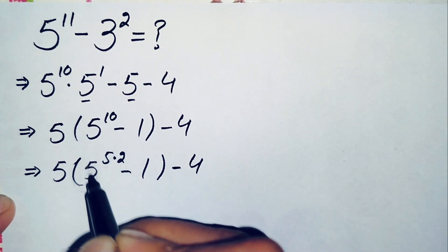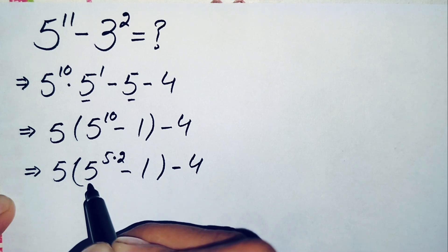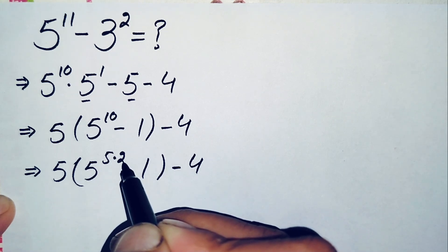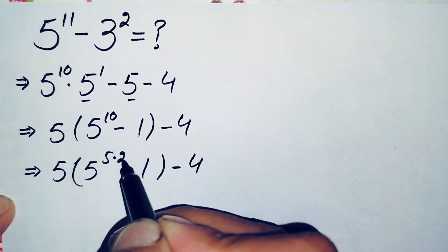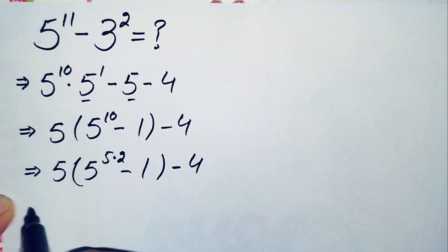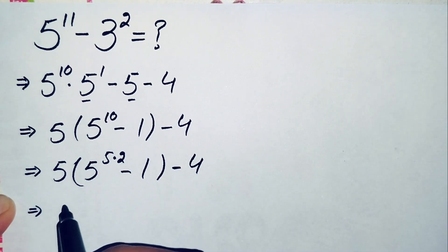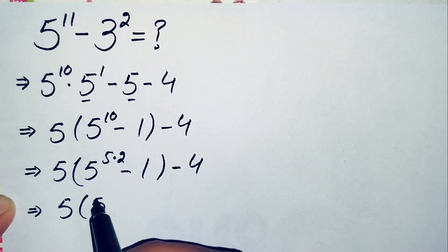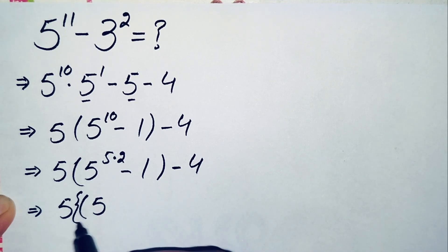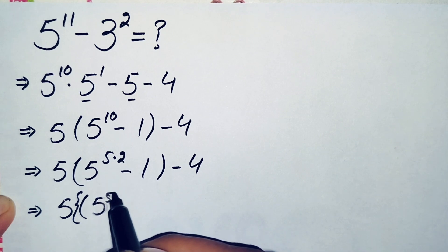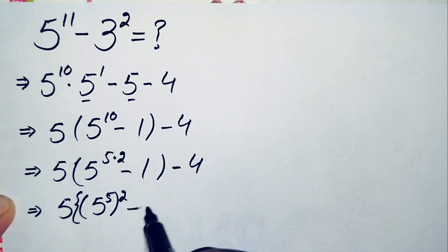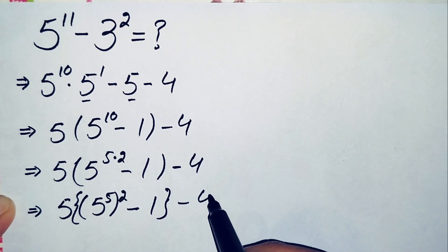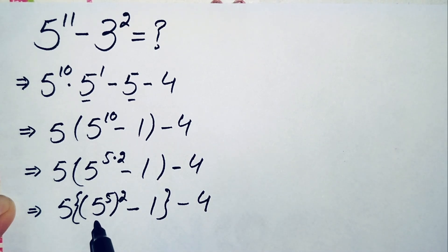Now here we will use the exponent math property: a raised to power m times n is equal to a raised to power m, whole raised to power n. So here we will take out this power 2 from 5 raised to power 5 times 2. This will become: 5 times, then 5 raised to power 5, whole raised to power 2, minus 1, minus 4.